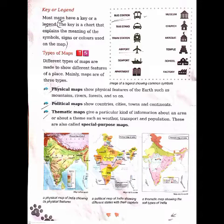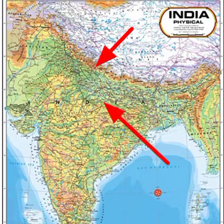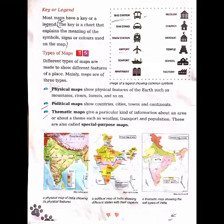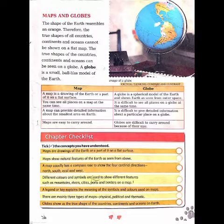Thematic maps are also called special purpose maps. Now look at the pictures. The first map is a physical map showing different mountains and forests — brown color represents mountains and green color represents forests. The second map is a political map where you can identify states in different colors, cities, and towns. The third map is a thematic map representing different types of soil in India.